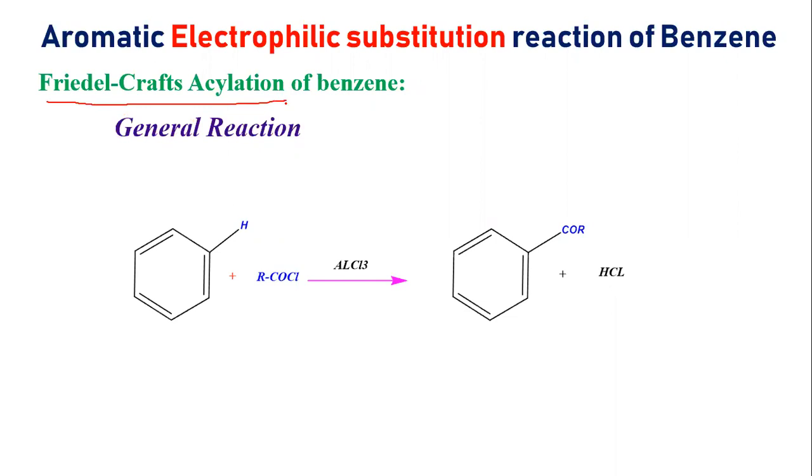Basically, Friedel-Crafts Acylation of Benzene is the introduction of an acyl group like C double bond O R group. We introduce this group at the benzene ring position in the presence of a Lewis acid catalyst.